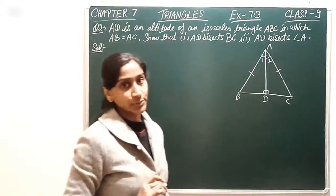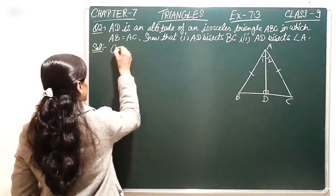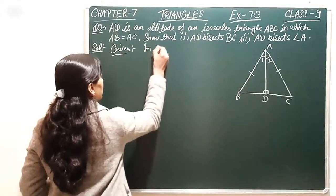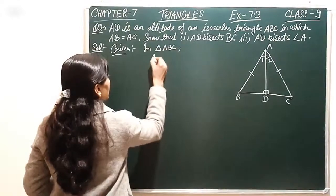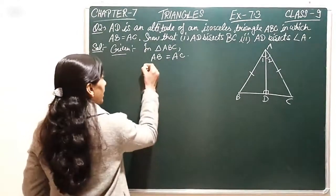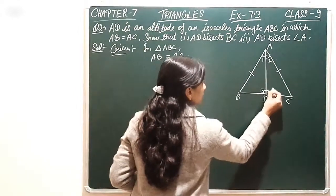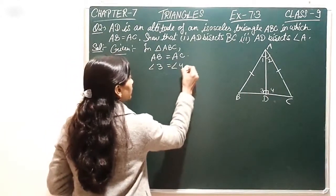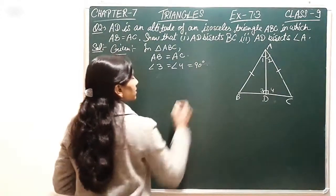This equals AD bisects BC. In this triangle, AB is equal to AC, which we have given. And if we name this angle 3 and angle 4, so angle 3 is equal to angle 4 is equal to 90 degrees.